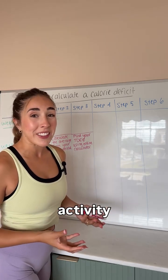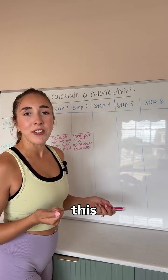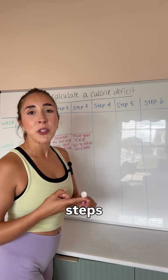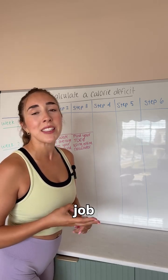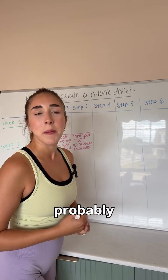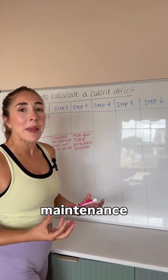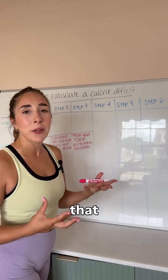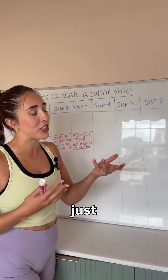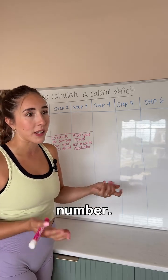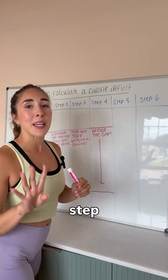If you're stuck on what your activity level should be on the online calculator, pop a comment on this video with how many steps you get, how often you work out throughout the week, and how active your job is, and I can let you know what category you should probably be in. This calculator is gonna give us our maintenance number — the amount of calories you need in the day to stay the exact same weight, which is not our goal, but we just need to know this number. Write it down and keep it out for the next step.